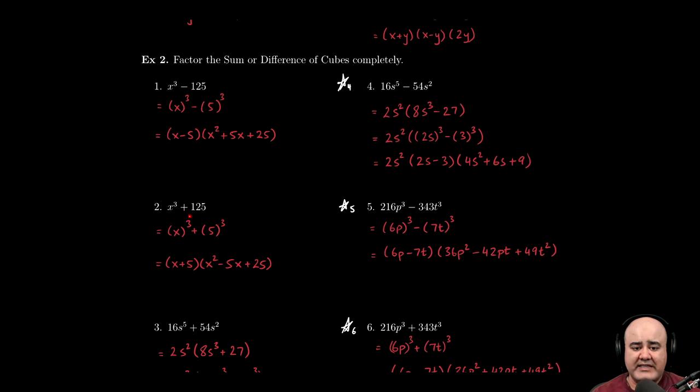The next example is x cubed plus 125. Now here I'm going to sort of talk about the power of knowing the formulas. If you know the formula for x cubed minus y cubed or a cubed minus b cubed, remember we said that it's the same formula for the sum, except the signs are different. Algebraically you're going to get the same stuff. So if you have x and 5 here, you're also going to get x and 5 here.